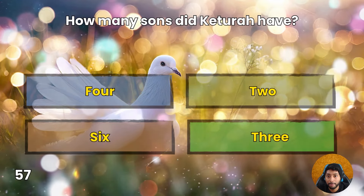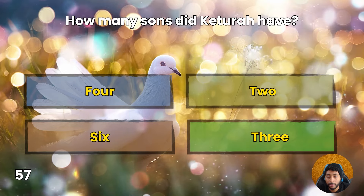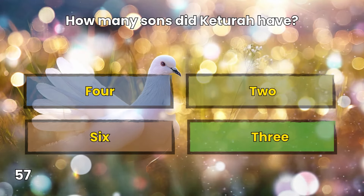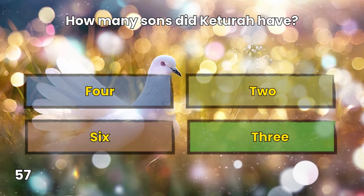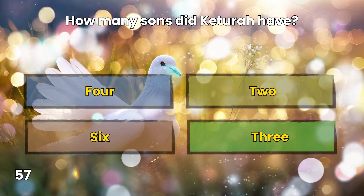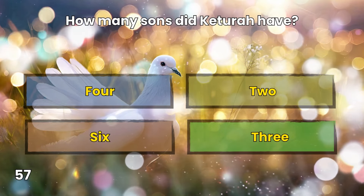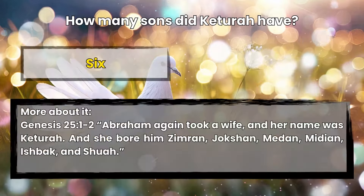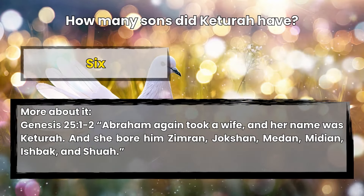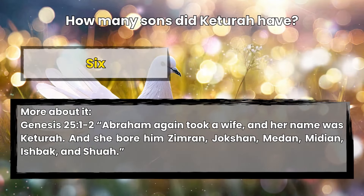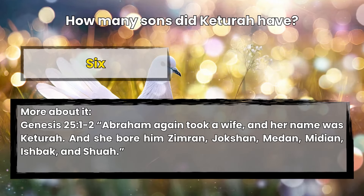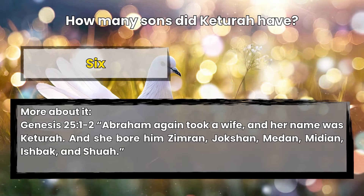Question 57: How many sons did Keturah have? 4, 2, 6, or 3? Six. Genesis 25:1-2 — Abraham again took a wife, and her name was Keturah, and she bore him Zimran, Jokshan, Medan, Midian, Ishbak, and Shuah.